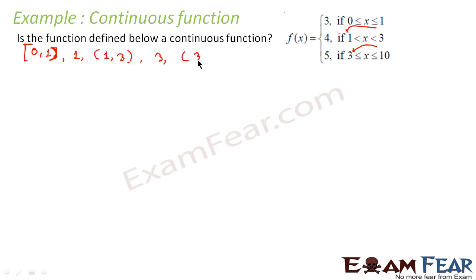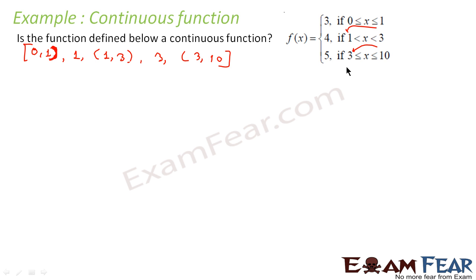So we have five buckets total. Zero to one: zero is included, one is a point of contention so it's not included here but gets its own bucket. One to three: one is not included again, three is a point of contention so it's separate. Three to ten: three is not included here because it already has its own bucket, and ten is included as the endpoint.